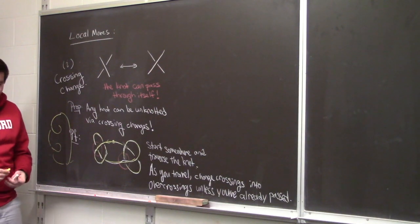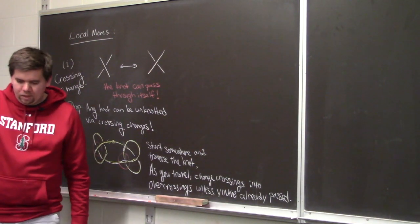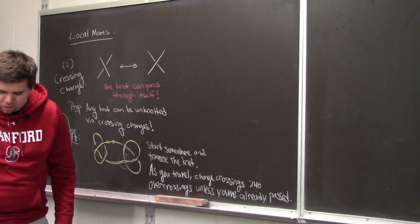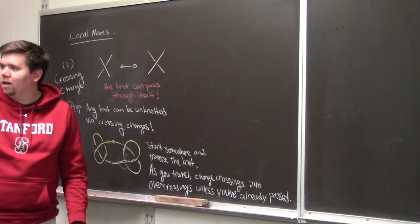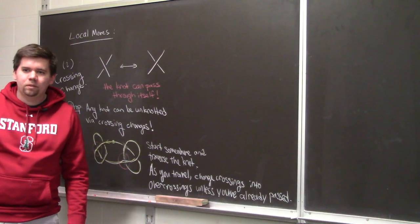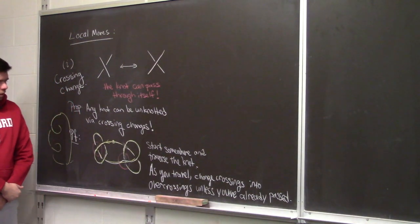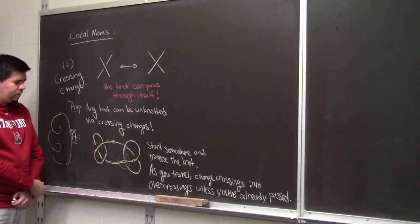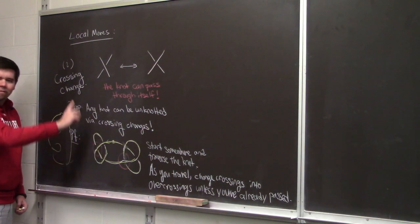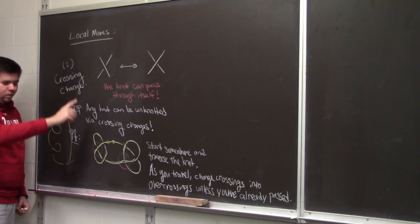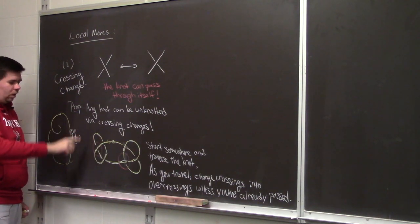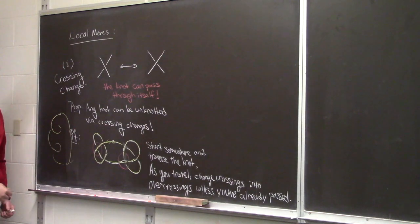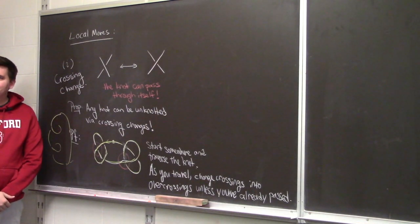You can imagine: if you have a piece of string and you lay it down on a table so it always crosses over itself, there's no way it can get knotted up. You could do the exact opposite — make all crossings undercrossings — and then the knot's always traveling upwards. That's an arbitrary choice, but just one way to see we can accomplish this.